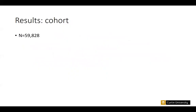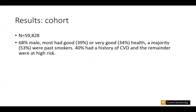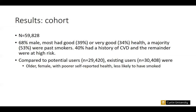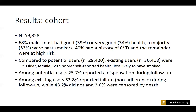The cohort included about 60,000 people. Two thirds were male, three quarters had good or very good self-reported health, and a slight majority were past smokers. About 40% had a history of CVD and the remainder had high CVD risk. The cohort was evenly split between potential and existing statin users. Existing users were older, more likely to be female, and had poorer self-reported health. About a quarter of potential users initiated statins during follow-up, while among existing users over half reported non-adherence. Three percent were censored by death.